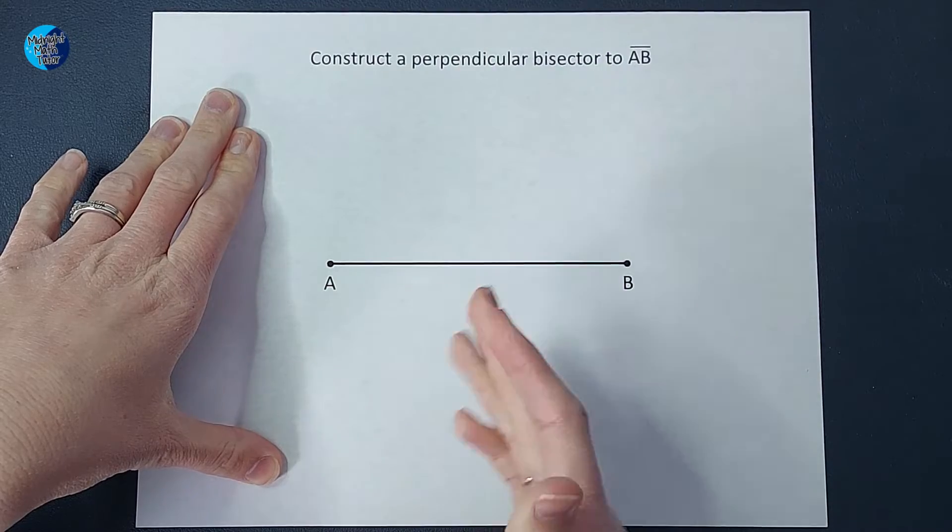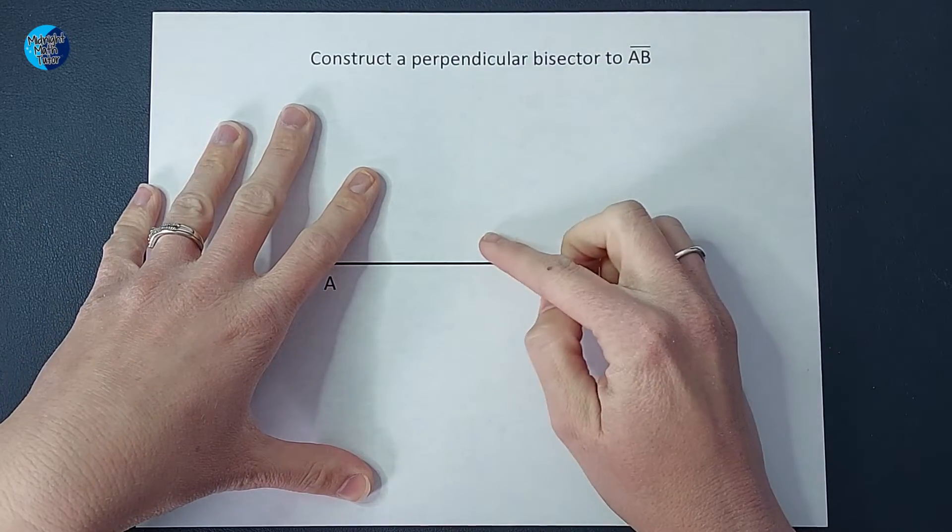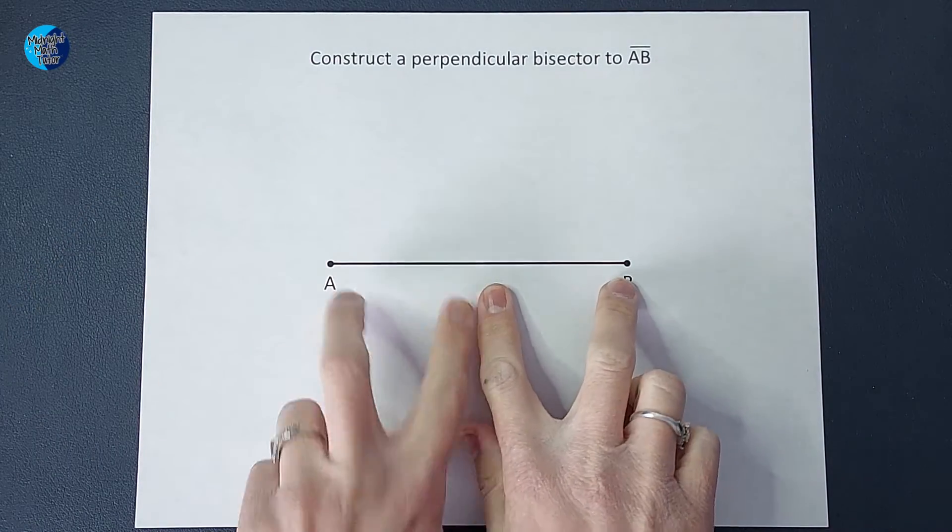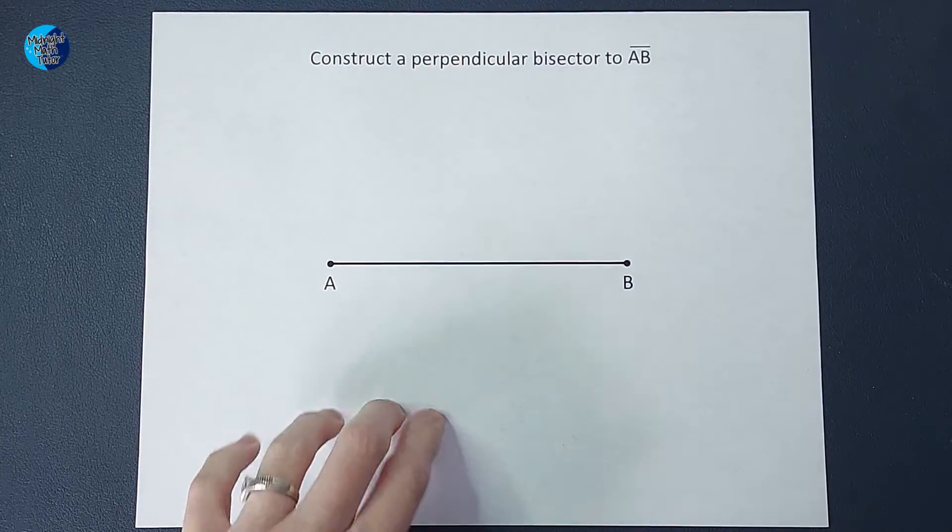It is a line that we want to go through here that is perpendicular, meaning it's 90 degrees. And also it's a bisector, which means it cuts this line segment exactly in half.